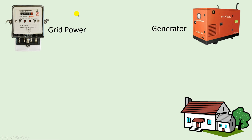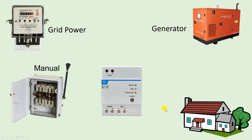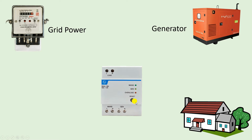Now if you have two different power supplies to run electrical devices in your home, then you have to use a changeover switch. You will get two types: the first is a manual changeover switch, and the second is an automatic changeover switch. If you want to use a changeover switch for your home, I suggest you use the automatic one. Now we have to do the connection of this changeover switch with the energy meter and generator.